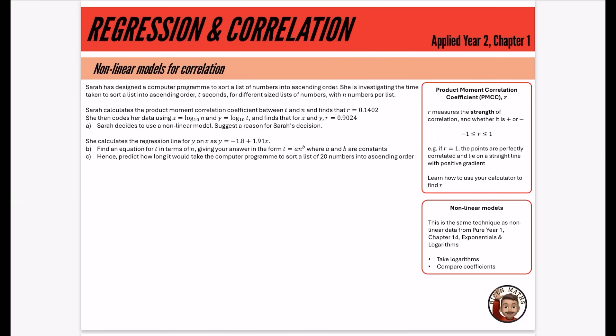Okay, we are now on the first video of the A2 stuff for applied. This is applied year two, starting off with chapter one, which is statistics and its regression and correlation. Remember, correlation was looked at in year one, so I won't be going over all of the details of correlation because that's already been covered.